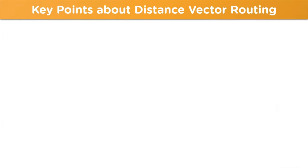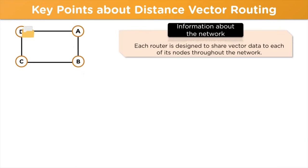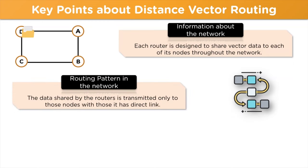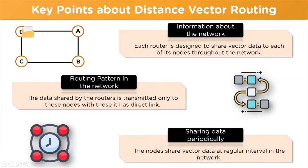For the routing protocol, three primary key points are to be remembered. First, each router is designed to share the vector data of each node throughout the network, to maintain proper circulation of data. Second, the data shared by routers is transmitted only to nodes directly linked to a particular router. Third, the routing protocol shares updated vector data periodically across the network channel.